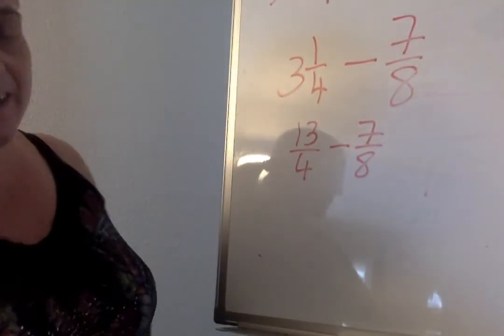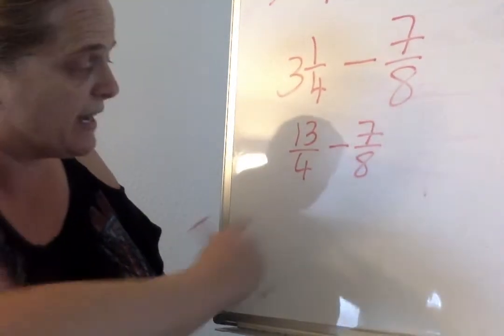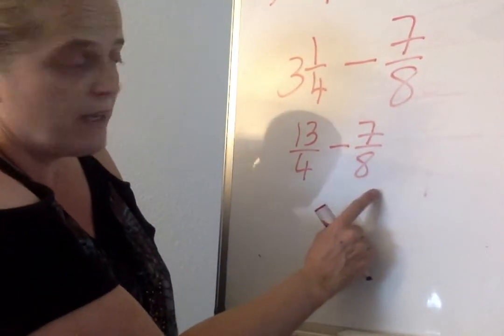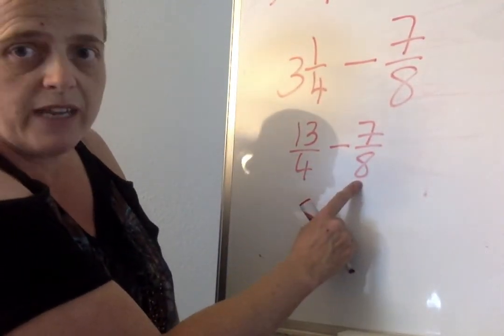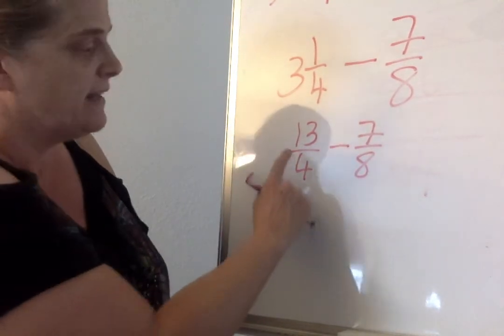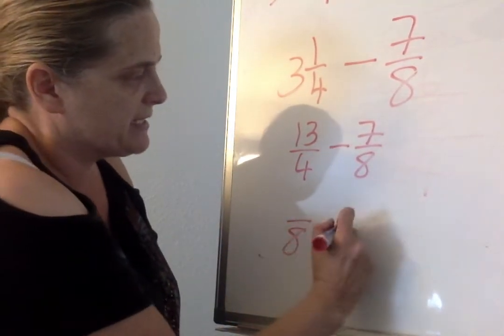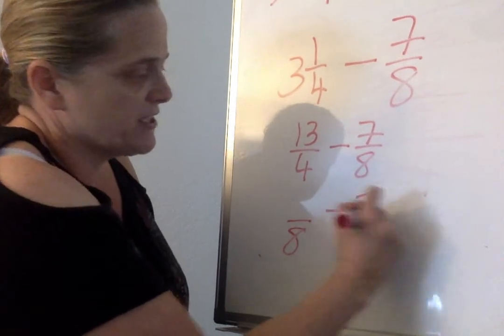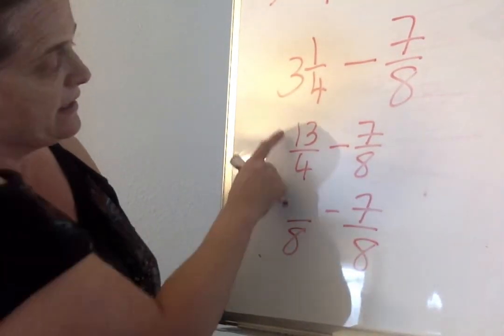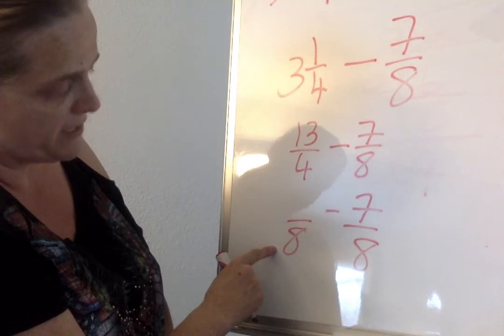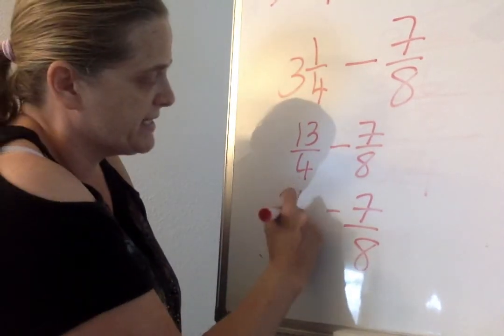Now, we need to get a common denominator. You can't add or subtract if the denominator is not the same. Wait a minute. Is 4 a friend of 8? 4, 8. Oh yes! Let's change this fraction to 8. We didn't touch the 7 over 8. Leave it as. 13 over 4 we did. 2 times 4 is 8. 2 times 13 is 26. Now they're 8. Can we subtract? Yes.